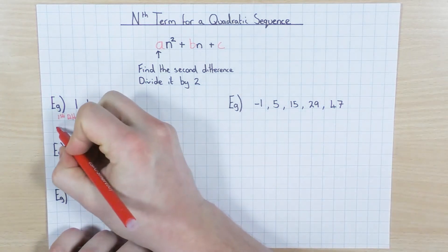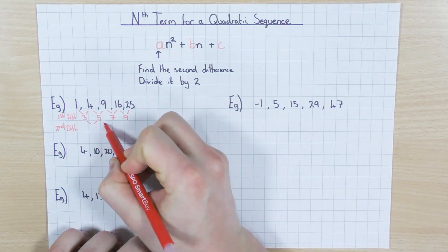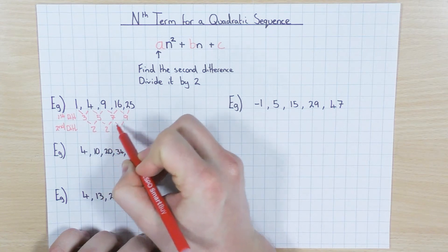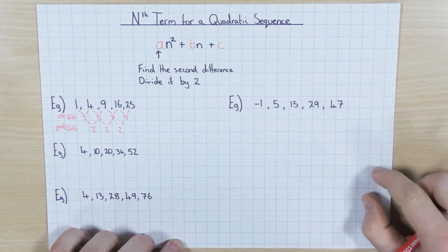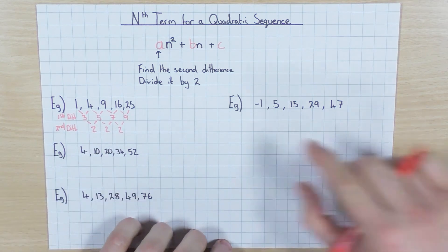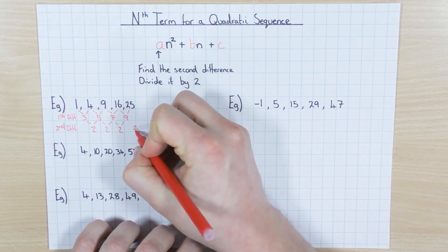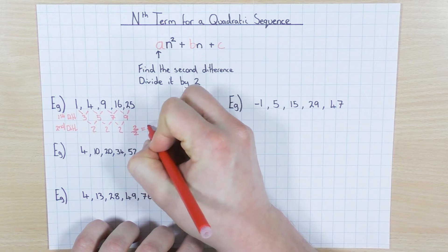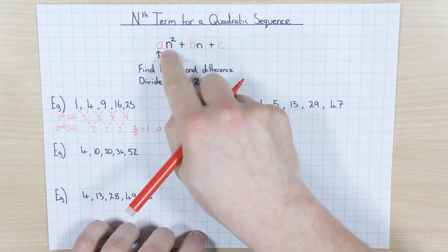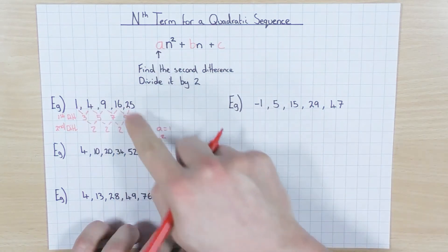So I need to find the second difference of these numbers. The difference between 3 and 5 is 2, 5 and 7 is 2, and 7 and 9 is 2. That's how I know this is a quadratic sequence — because the second difference is the same. So I find the second difference, it's 2, and then divide it by 2: 2 divided by 2 is 1, which tells me that a equals 1, which goes in front of the n squared — so 1n squared is just n squared. That's the first bit for this particular example.